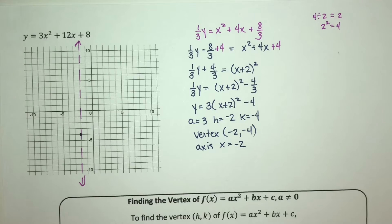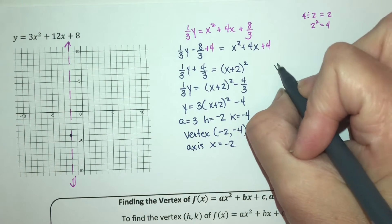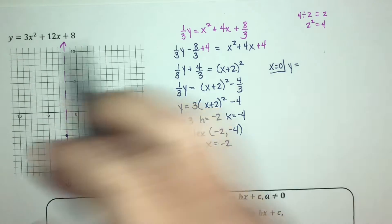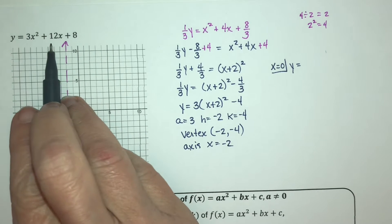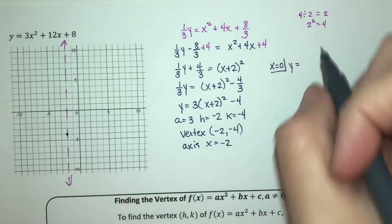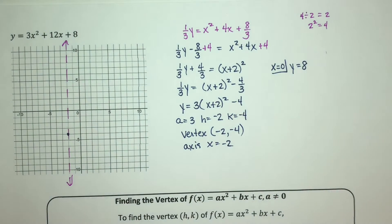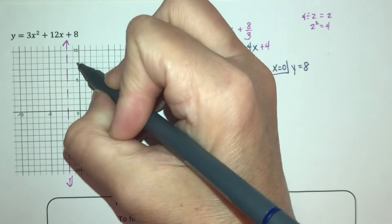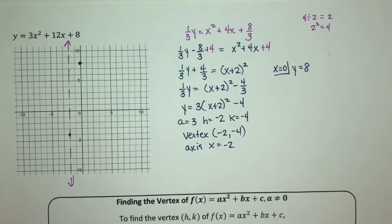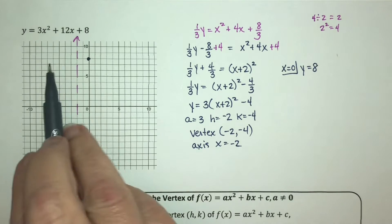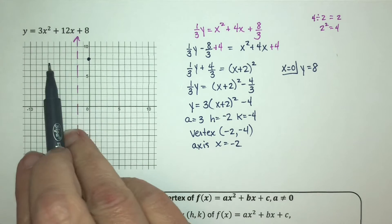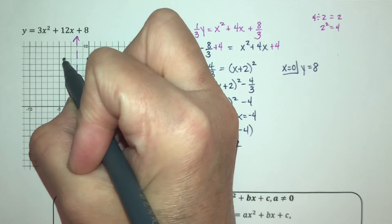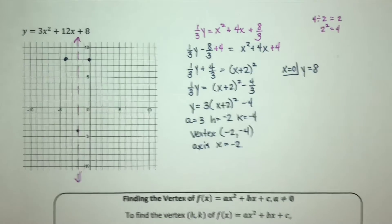Let's find the y-intercept. So if my x value is 0, then I have y = 3(0)² + 12(0) + 8, which is just 8, which is here. And I can use symmetry to get another point on the other side. I'm 2 units away from the axis here, so I go 2 units on the other side, which is right up there.